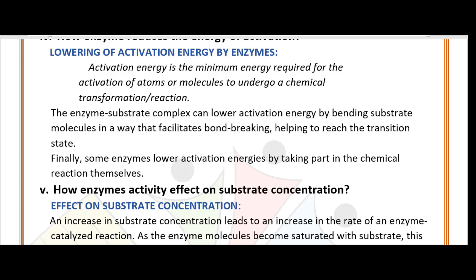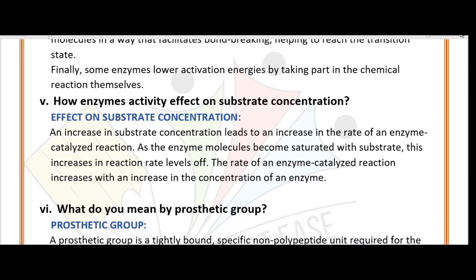Question five: How does enzyme activity affect substrate concentration? An increase in substrate concentration leads to an increase in the rate of enzyme-catalyzed reaction. As the enzyme molecules become saturated, the rate of enzyme-catalyzed reaction increases but then levels off. Increasing enzyme activity causes a corresponding increase in substrate concentration utilization.